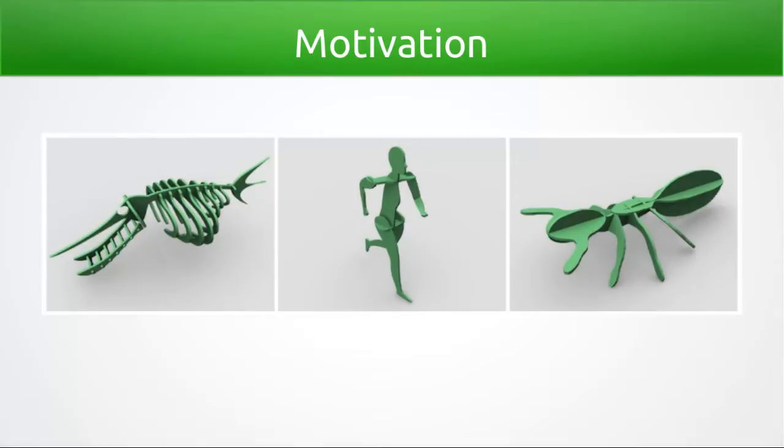But some objects we want to create cannot be produced by taking slices of an input surface, either because the surface does not exist, or more importantly that there is no surface that satisfies the arrangement of sections. There is a spectrum. Some objects, like the fish on the left, do not conform to an input surface. The runner at center conforms partially, and the ant on the right was created completely by taking slices from an input surface.